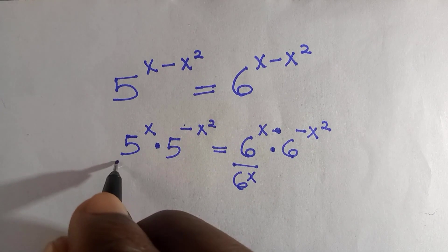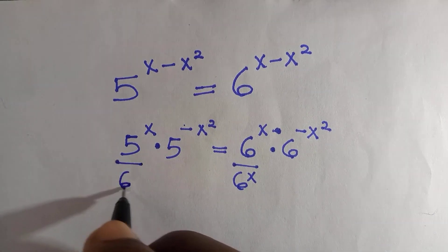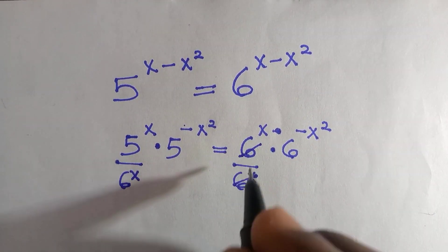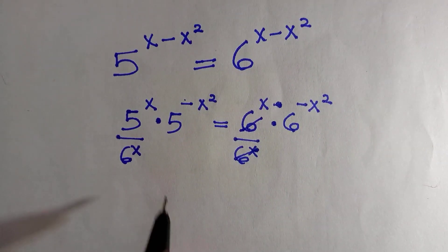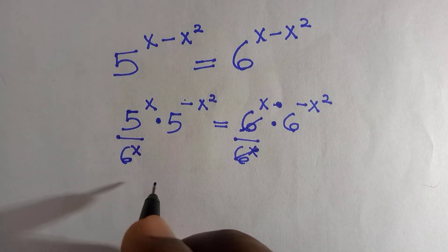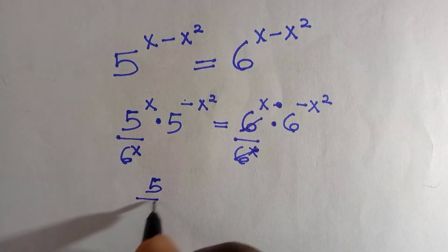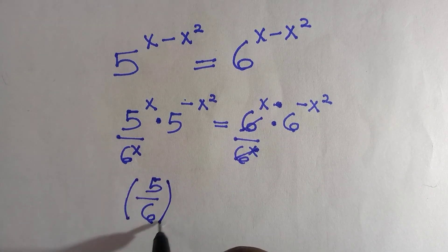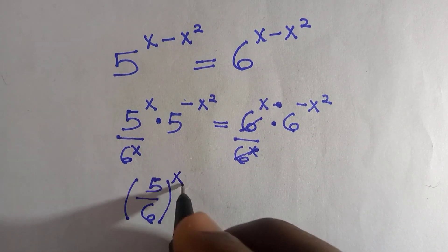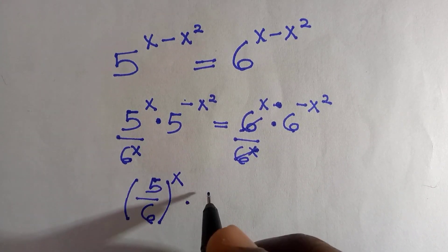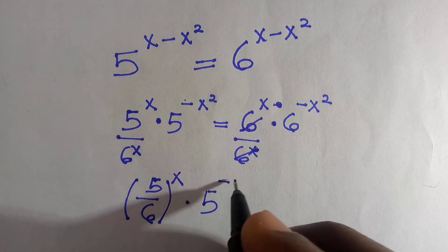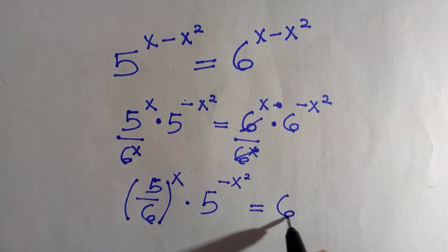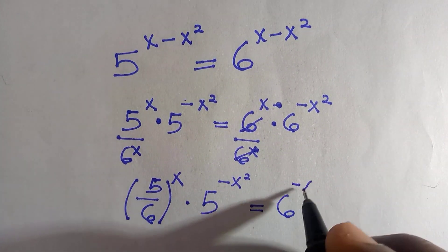We divide both sides by six raised to the power of x, since we have raised to the power of x common to both sides. We do the grouping, and by doing that these cancel. The next thing is we write five divided by six, and both of them will be working on that raised to the power of x, dot five raised to the power of negative x squared, equals six raised to the power of negative x squared.